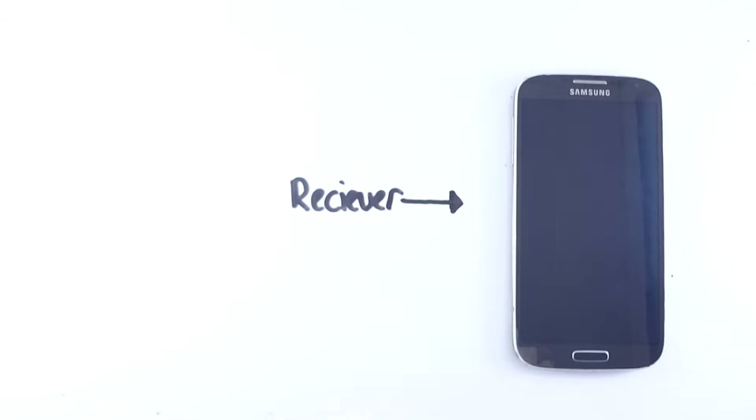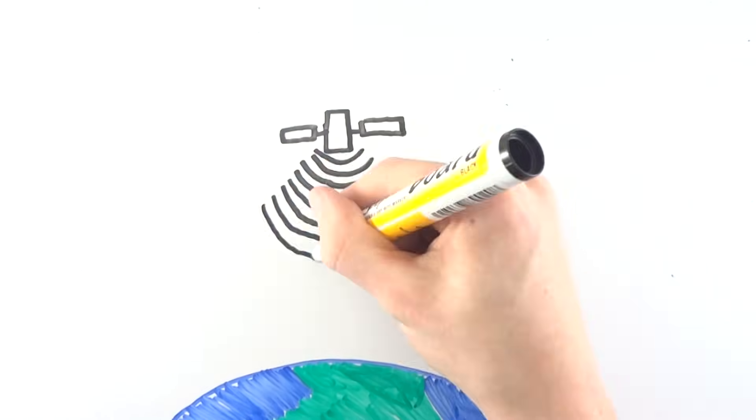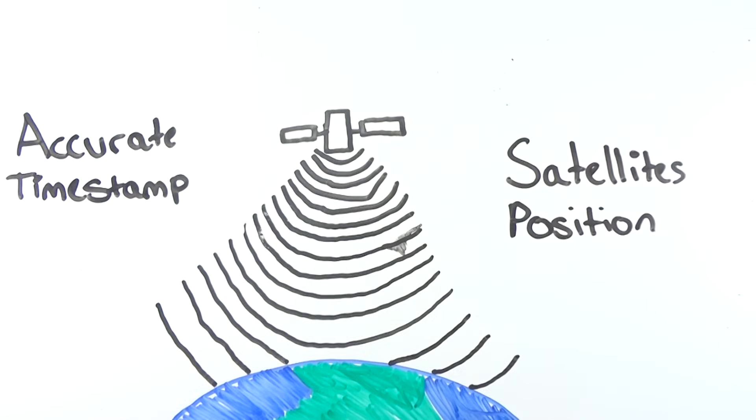As GPS units are receivers, there needs to be something sending some sort of signal to devices such as your phone to receive. Each GPS satellite broadcasts a navigational message towards Earth, which contains an extremely accurate timestamp obtained through an atomic clock onboard these satellites.